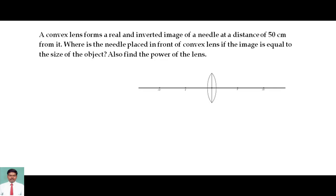A convex lens forms a real and inverted image of a needle at a distance of 50 cm from it. Where is the needle placed in front of the convex lens if the image is equal to the size of the object?